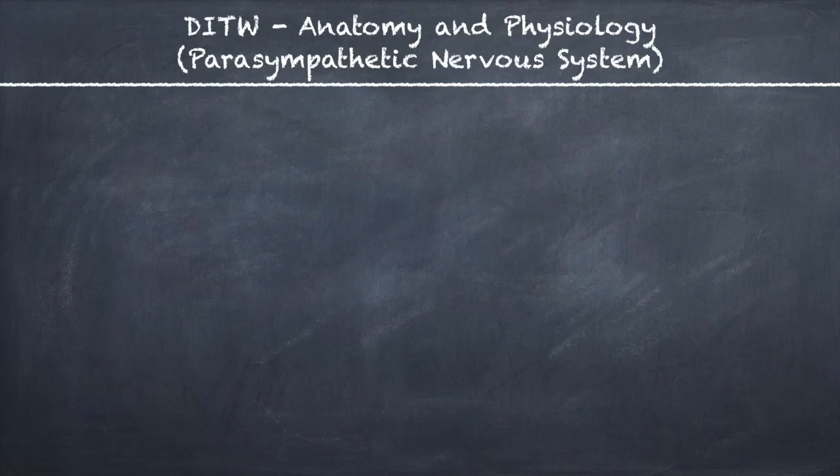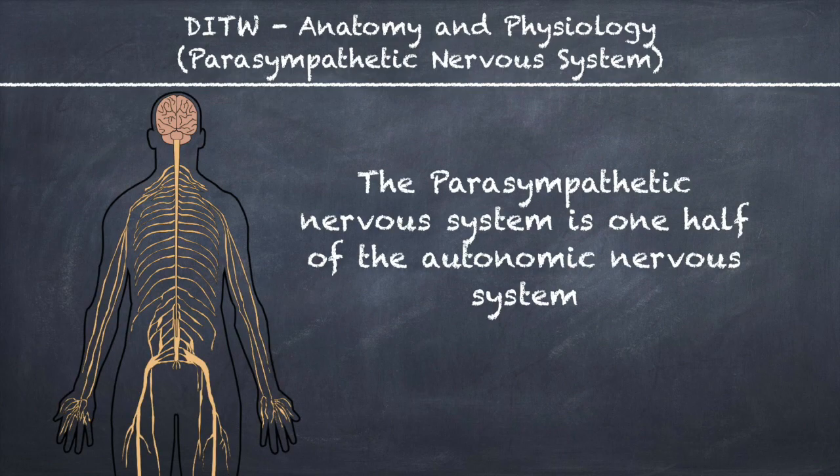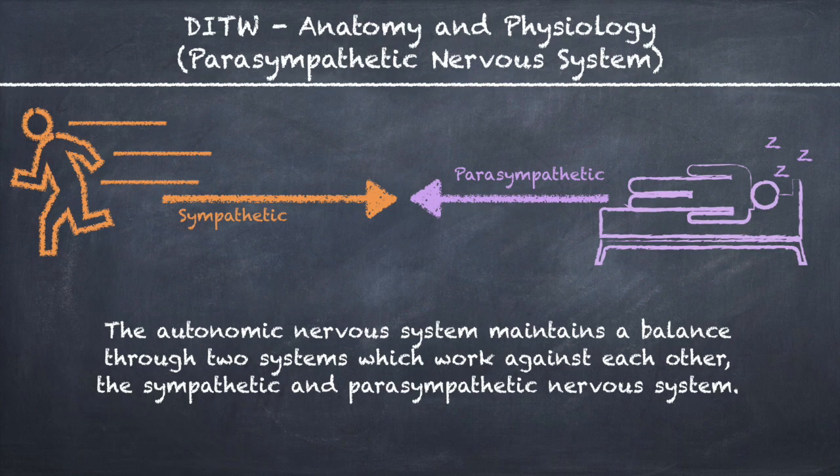This is DITW Anatomy and Physiology and you are watching the video on the parasympathetic nervous system. The parasympathetic nervous system is one half of the autonomic nervous system. The autonomic nervous system maintains a balance through two systems which work against each other: the sympathetic and parasympathetic nervous system.